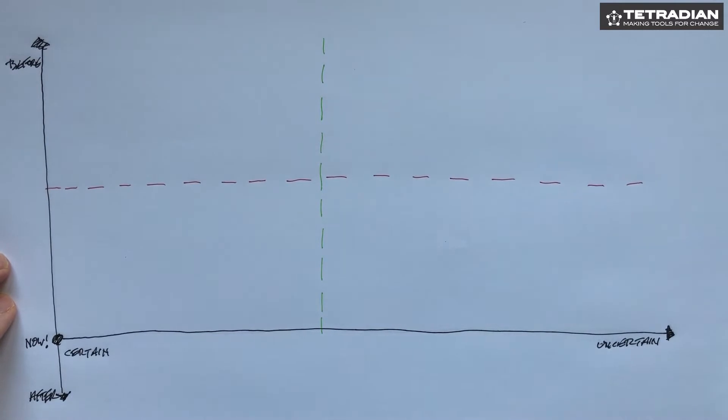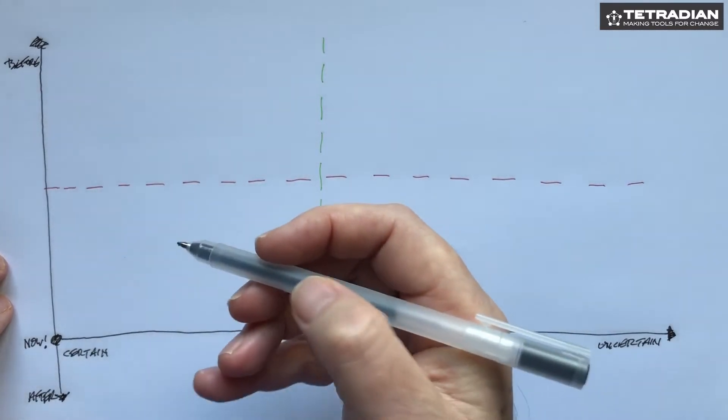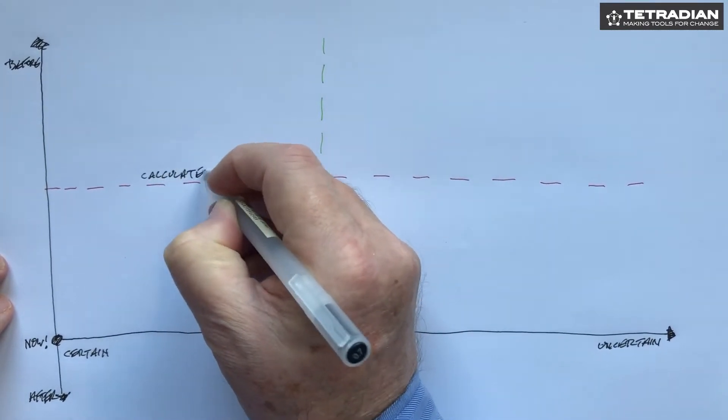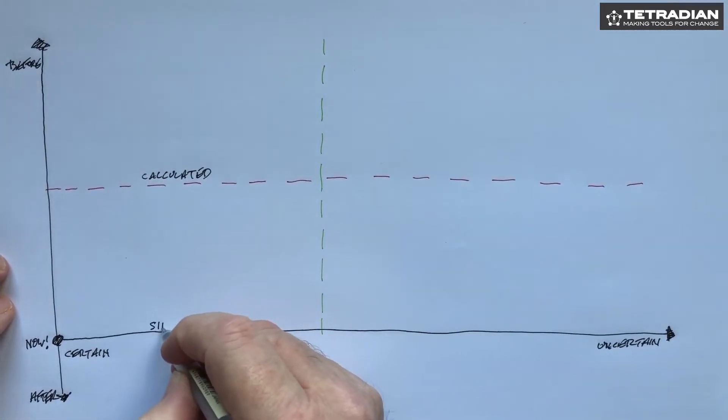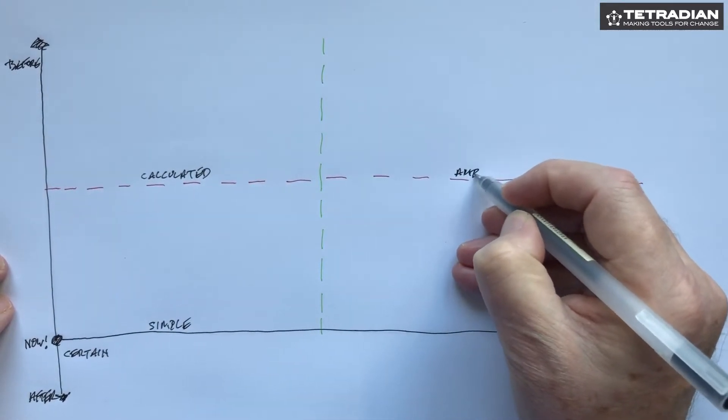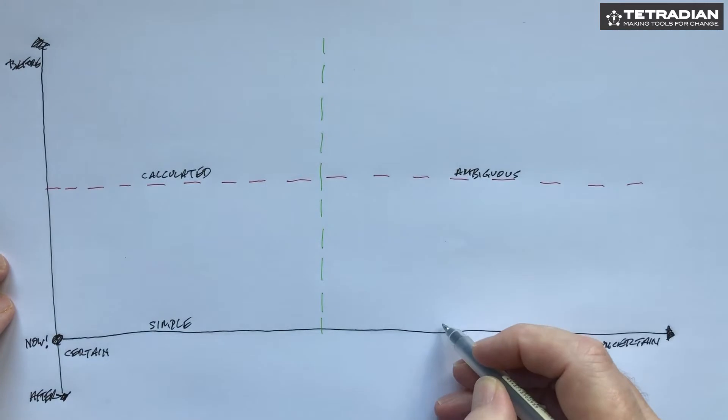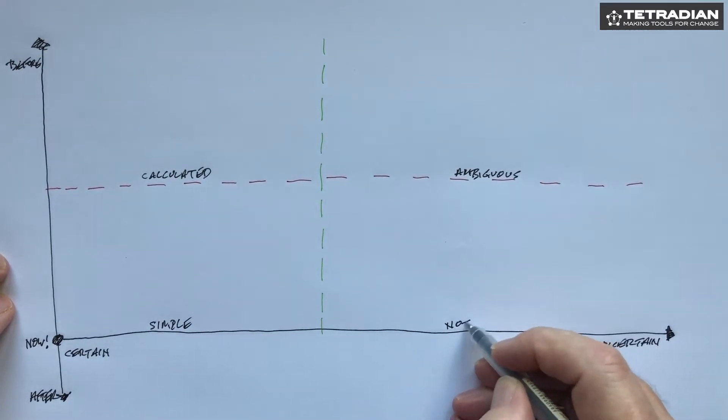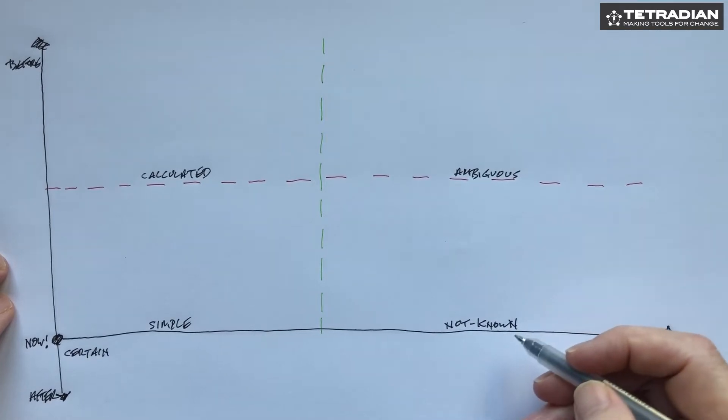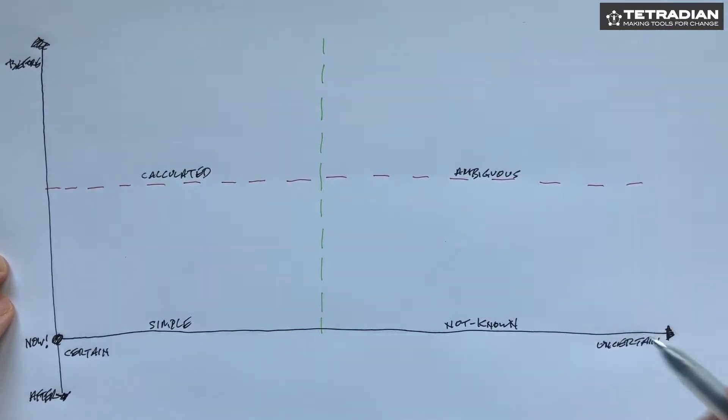We can give these labels or descriptors. Although we've used labels before of calculated or complicated, simple or rule based, ambiguous or pattern based and not known, nothing's the same, we have no time to think about it and it's inherently uncertain. We can give these labels or descriptors kind of roles if you like.